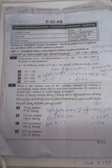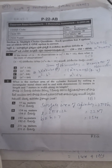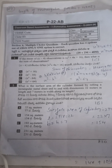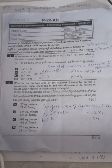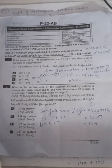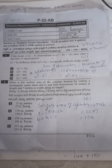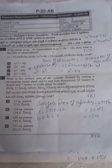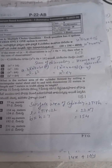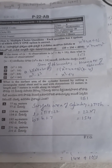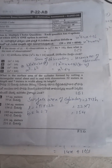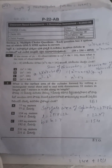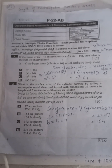The surface area of the cylinder formed is the curved surface area: 2πrh. The circumference of the circle becomes the length of the rectangle, so 2πr equals L, where L is 22. The width of the rectangle becomes the height, so height equals 7. Therefore curved surface area equals 22 into 7, which is 154 meter square.